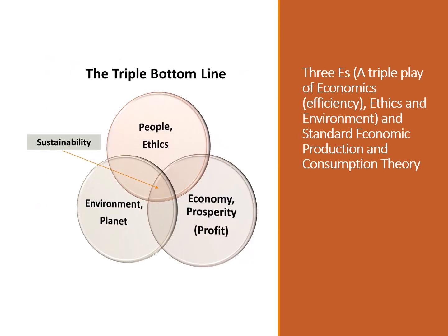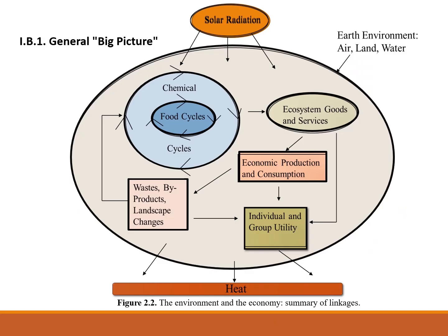As we saw in the previous lecture, the triple bottom line, or three E's, includes ethics, environment, and economy. The relationships and connection between the environment and economy are summarized in this figure. This figure shows that economic production and consumption and individual and group utility are dependent upon ecosystem goods and services, which are supported by chemical and food cycles.